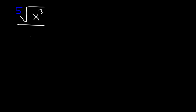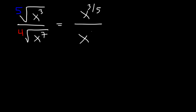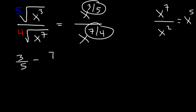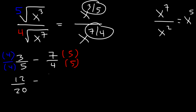Let's try this one. What is the 5th root of x cubed divided by the 4th root of x to the 7th? First, let's convert to fractional exponents: this is x raised to the 3/5 divided by x raised to the 7/4. When dividing with a common base, we subtract the exponents. So we have 3/5 minus 7/4. Getting a common denominator of 20: 3/5 becomes 12/20 and 7/4 becomes 35/20. So 12/20 minus 35/20 is negative 23/20.